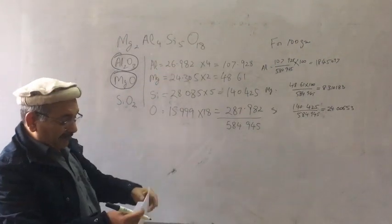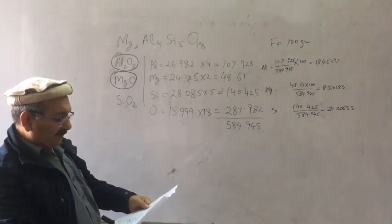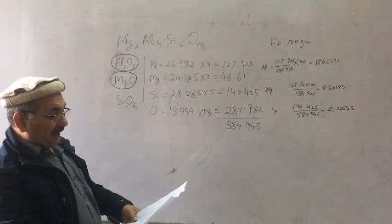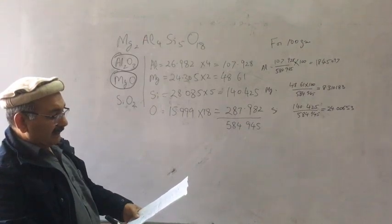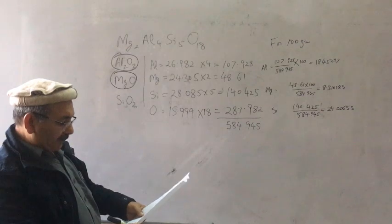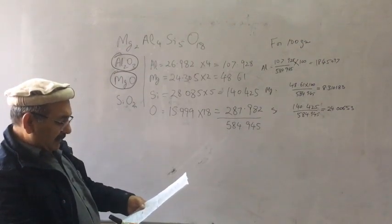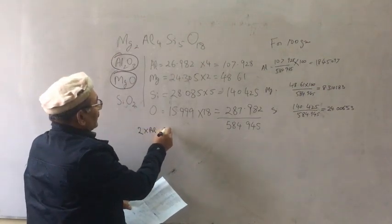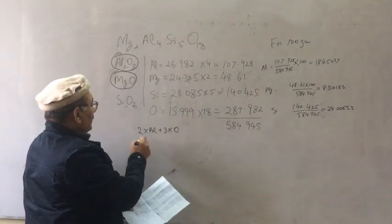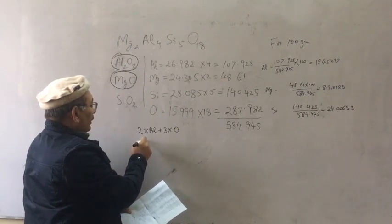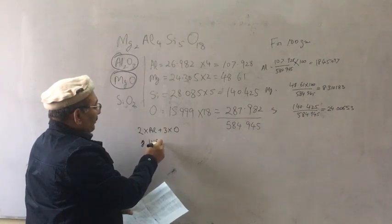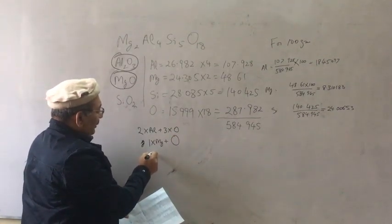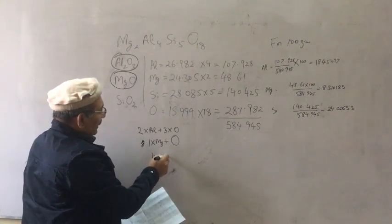The formula weights of these raw materials: the formula weight for alumina Al₂O₃ is two times the atomic weight of aluminum plus three times the atomic weight of oxygen. For MgO, it is one times the atomic weight of magnesium plus one times the atomic weight of oxygen.